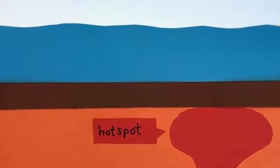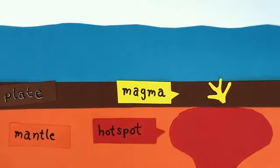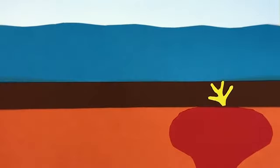A hot spot is a particularly hot part of the mantle that causes rocks to melt, producing magma. The magma rises up through the crust and forms a volcano.